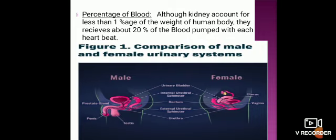The human urinary system, whether in the male or female, is utilized to remove metabolic waste in the form of urine. Thank you, students.